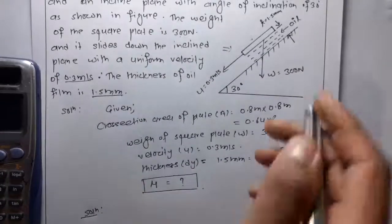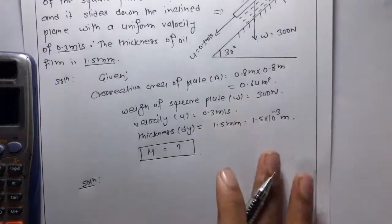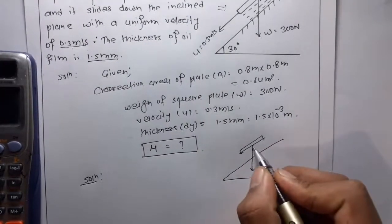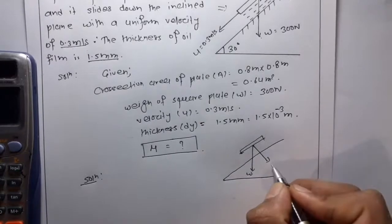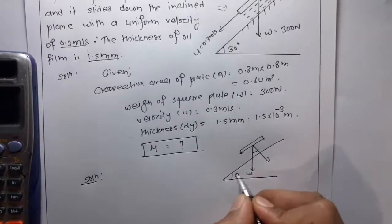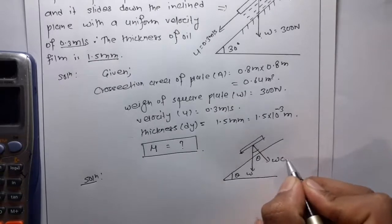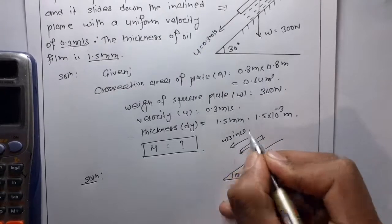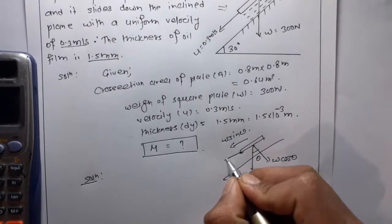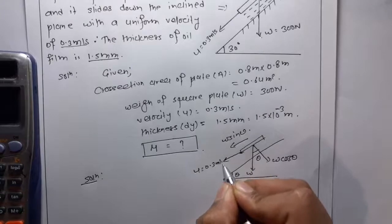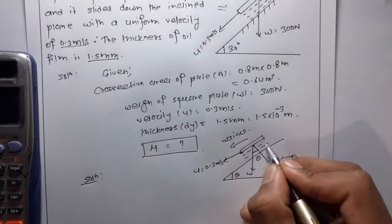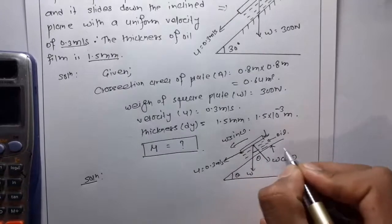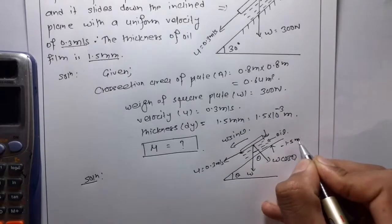Now for the solution, first we resolve this W. So this is W, this is theta and this is theta. This is W cos theta and this is W sin theta, and u is equal to 0.3 meters per second. Oil whose thickness is 1.5 mm.